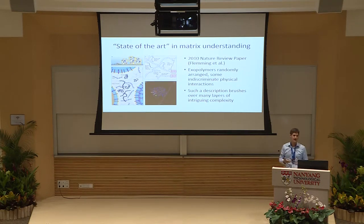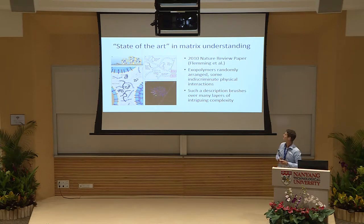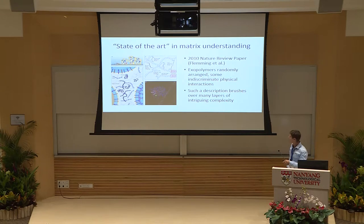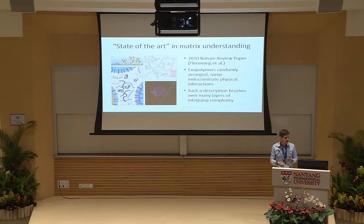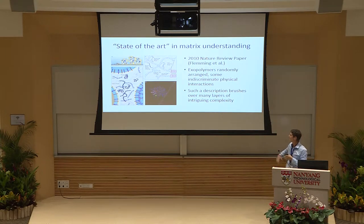We want to understand what this matrix is, what the important players in it are, and how they contribute to these functions. Unfortunately we're in a dark age in biofilm research. As recently as 2010, a review paper described the matrix in terms of an indiscriminate polysaccharide, some proteins, some DNA, all interacting in a fairly indiscriminate manner with hydrogen bonding and ionic interactions. As we know from the material presented today, this description doesn't do justice to the complexity and beauty of these systems.